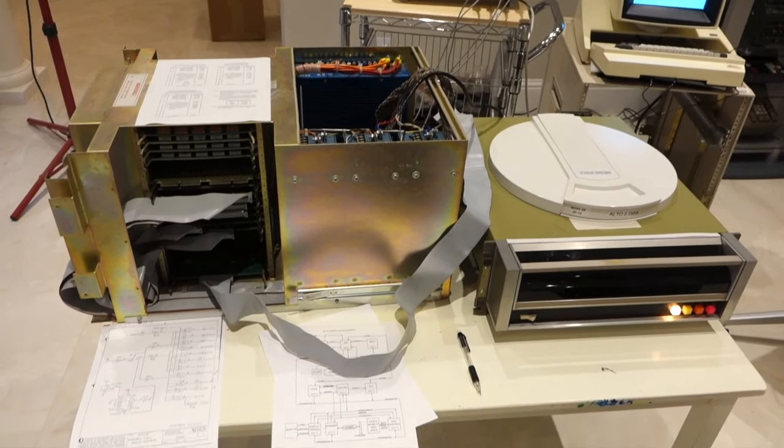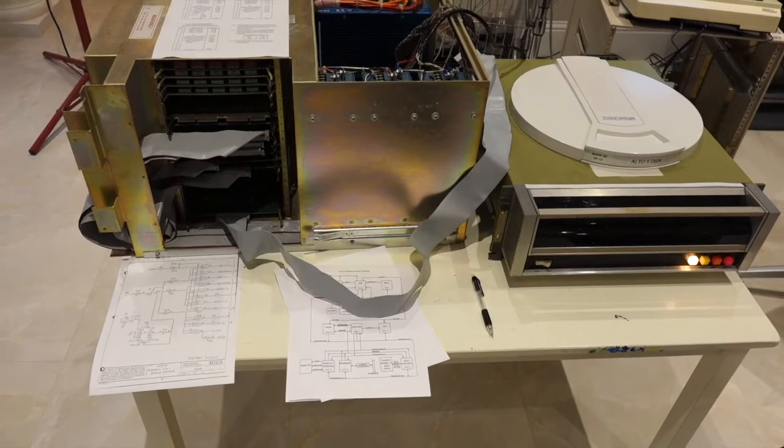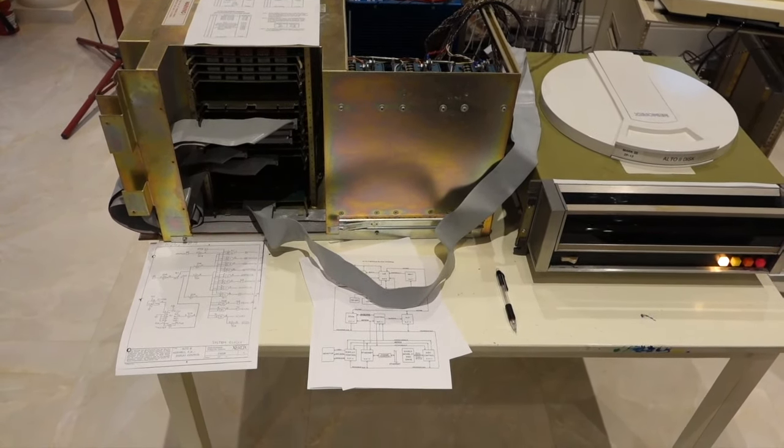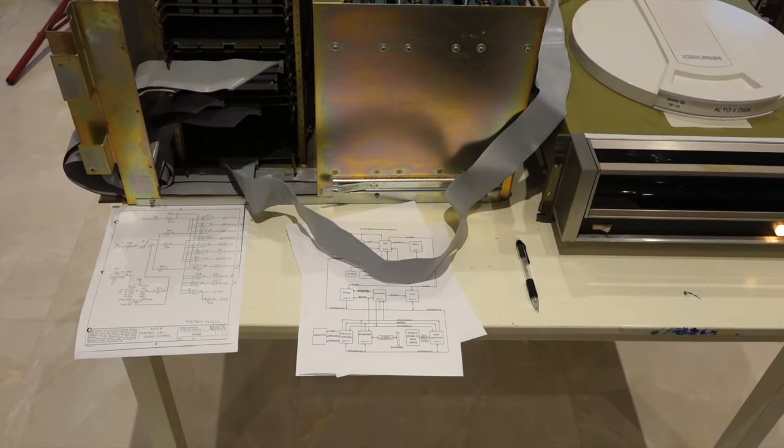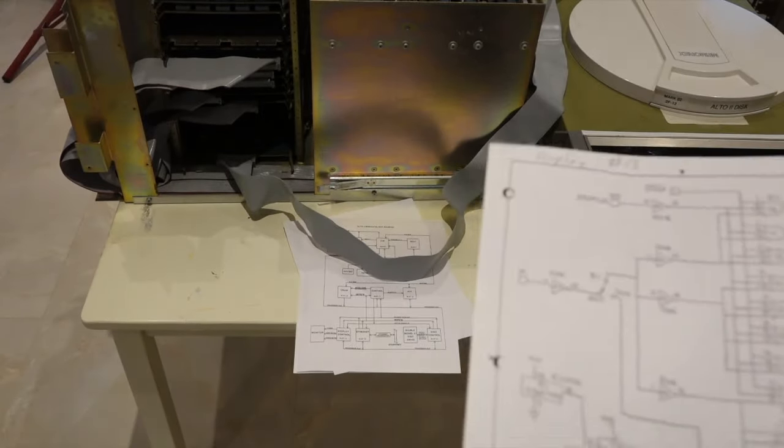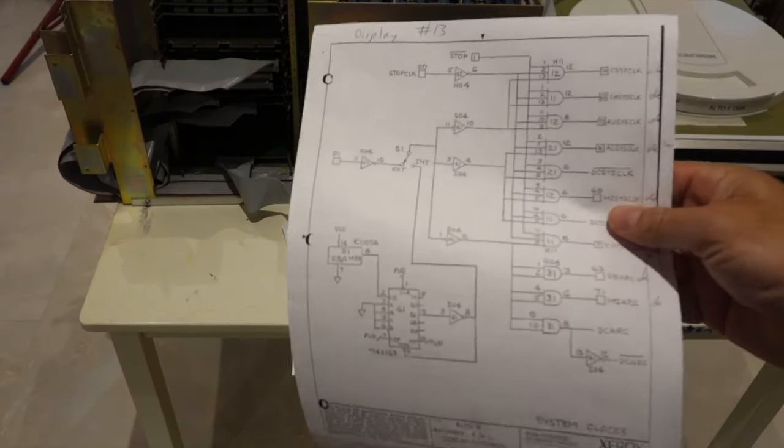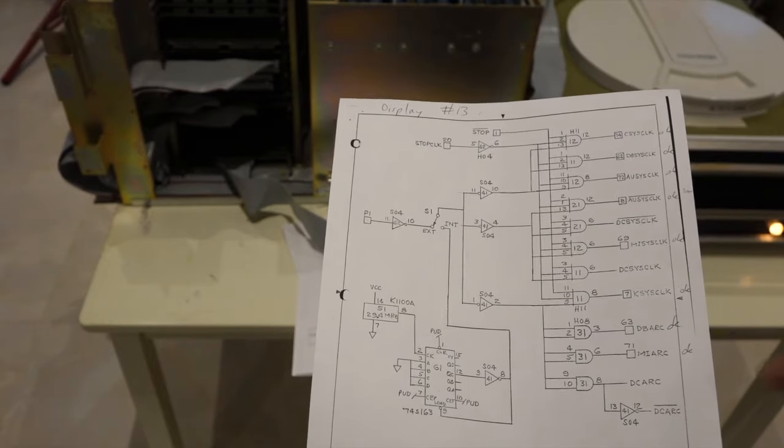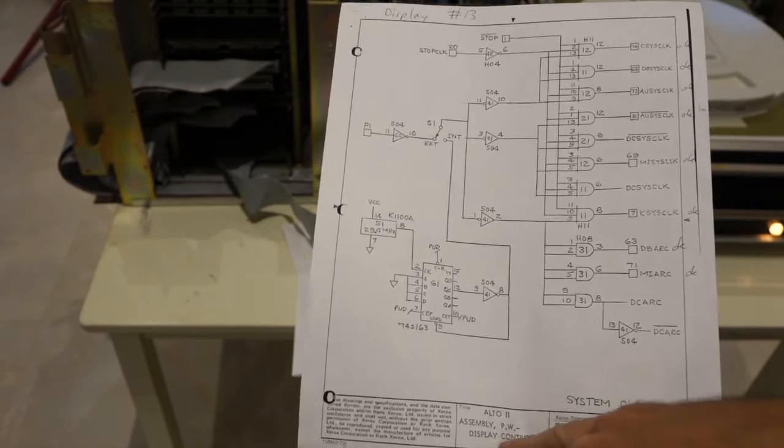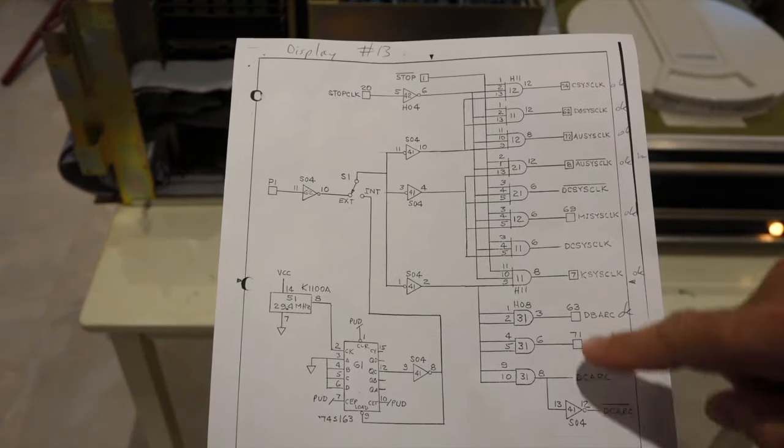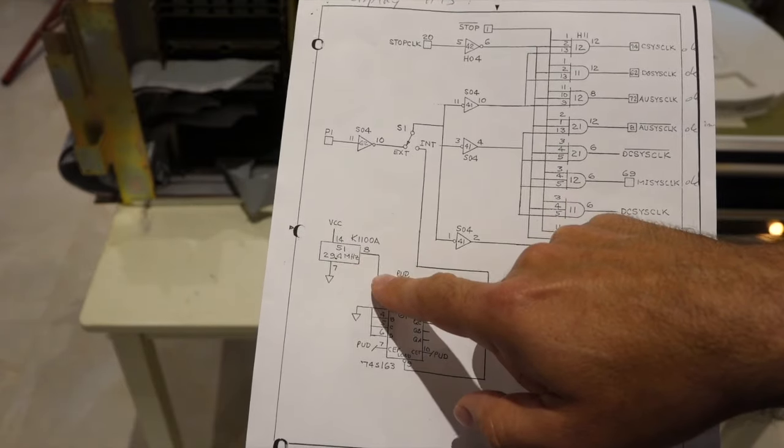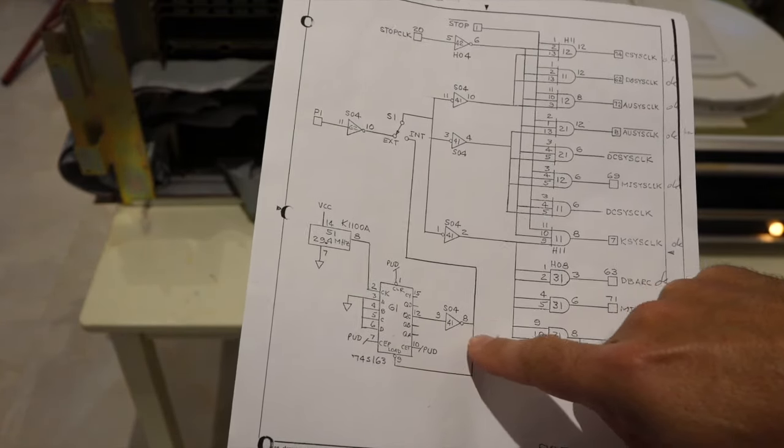So the first thing that we need to figure out is if there are some clock signals working in the processor. It turns out that the whole machine is based out of the display. So the display refresh rate dictates the clock, so the clock is on the display control. And there are a couple of them. So it's the 29 MHz clock divided by 5, I think.